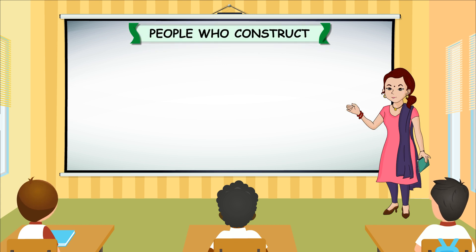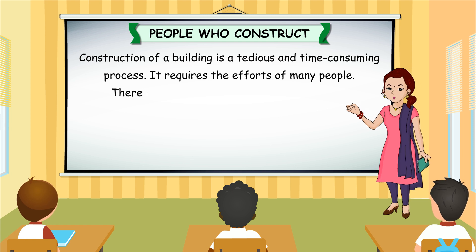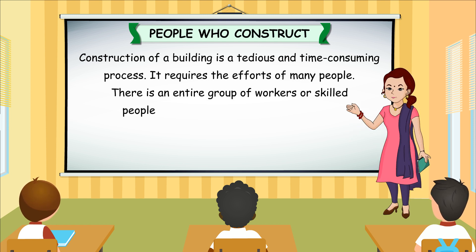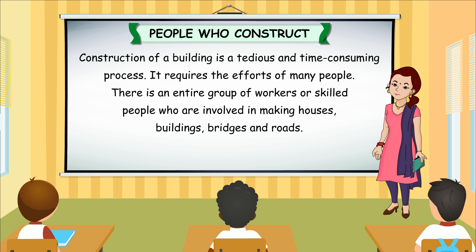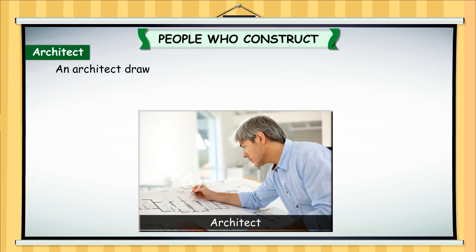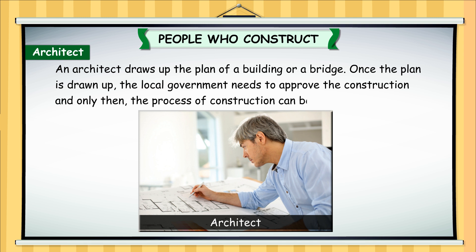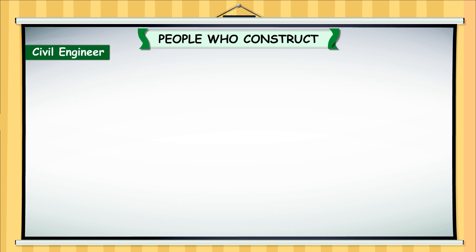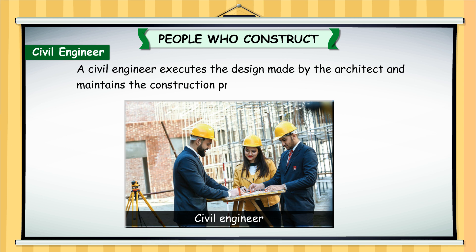Construction of a building is a tedious and time-consuming process. It requires the efforts of many people — there is an entire group of workers or skilled people who are involved in making houses, buildings, bridges and roads. An architect draws up the plan of a building or a bridge. Once the plan is drawn up, the local government needs to approve the construction, and only then the process of construction can begin. A civil engineer executes the design made by the architect and maintains the construction process.